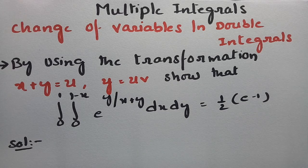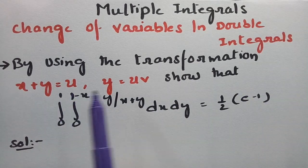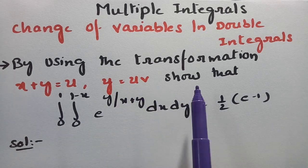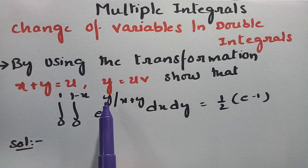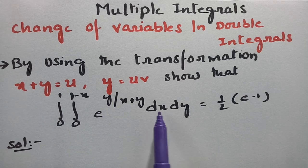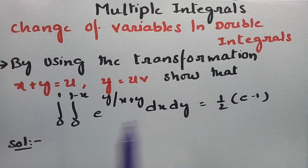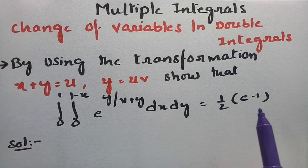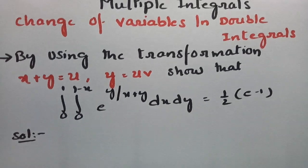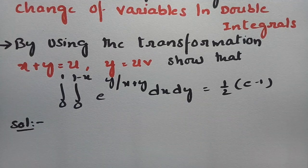Here is the problem on the screen: change of variables in double integrals. Using the transformation x plus y equals u and y equals uv, we have to show that the integral from 0 to 1, and 0 to 1 minus x, of e to the power y over (x plus y) dx dy is equal to half times (e minus 1).